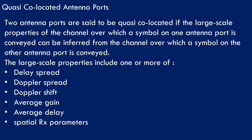3GPP introduced the quasi-collocation (QCL) concept to help the UE with channel estimation, frequency offset error estimation, and synchronization procedures. For example, if the UE knows that the radio channels corresponding to two different antenna ports are QCL in terms of Doppler shift, the UE can determine the Doppler shift for one antenna port and apply the result to both. This avoids calculating Doppler for both ports separately. The UE can complete channel estimation using one transmission and then apply the results to help reception of the second transmission.